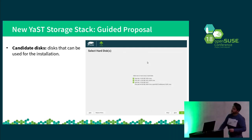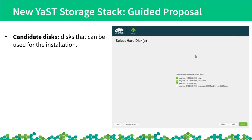This is the first dialogue you will see when using the guided setup button. This dialogue is only presented if we have several disks in our system. Here we can select the candidate disks — basically, which disks we want the proposal to use for the installation. If we don't want to use a specific disk, we can unselect it, and then the proposal will not touch that disk at all.